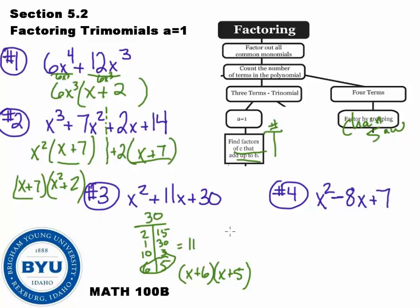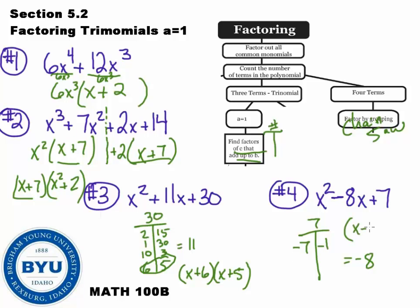Number 4: no common stuff, 3 terms. I write out the factors of 7 that come out to negative 8. The only factors I can think of are 7 and 1. I need those to become negative 8, so they would both have to be negative. My answer is x minus 7 and x minus 1.